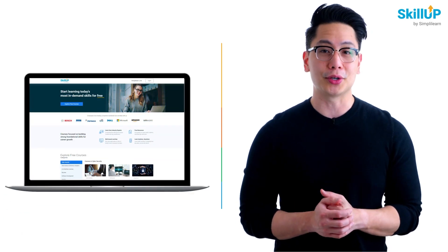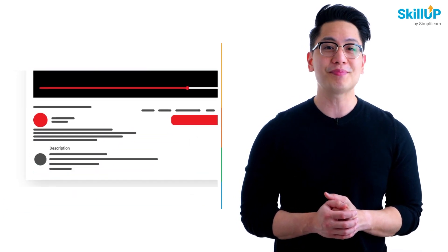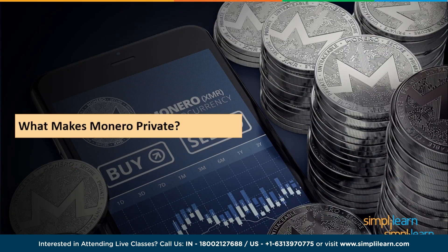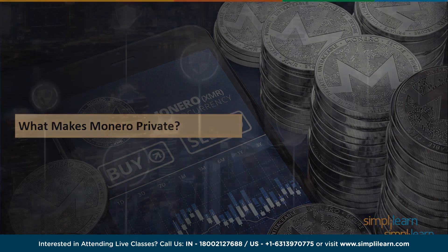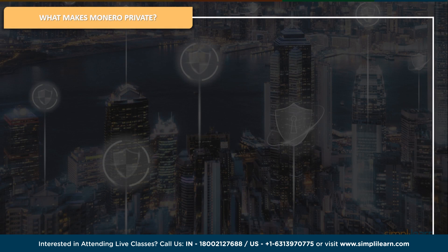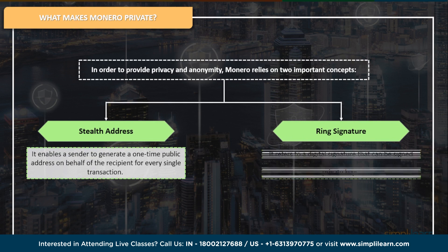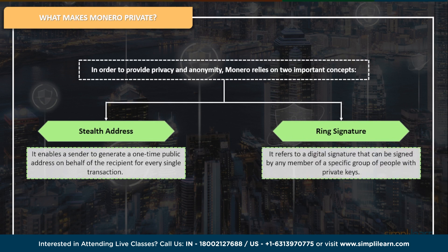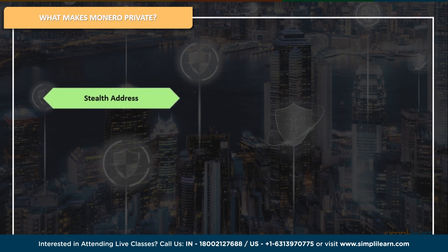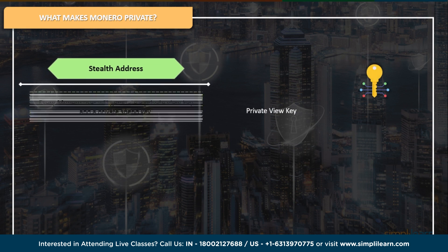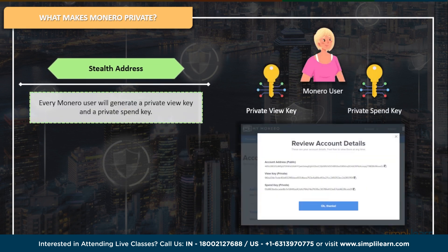Monero's privacy features make it different from other cryptocurrencies. In order to provide privacy and anonymity, Monero relies on two important concepts: stealth addresses and ring signatures. With stealth addresses, a sender can create a unique public address on behalf of the recipient for each transaction, while the recipient can still receive all payments using a single public address.